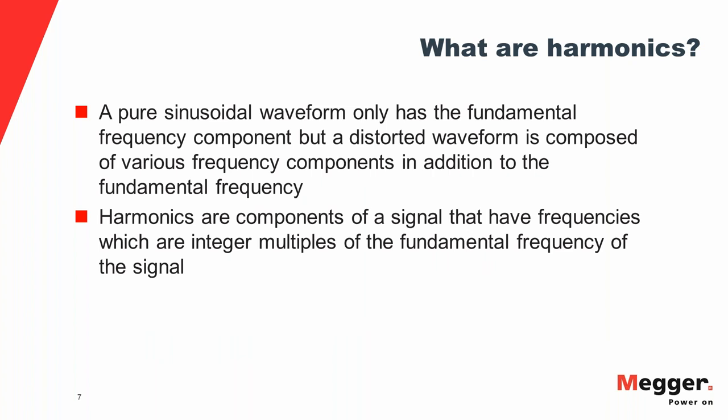What are harmonics? A clean waveform — a pure sinusoidal wave — consists only of the fundamental frequency component. The fundamental frequency is the system frequency: 60 Hz in a 60 Hz system, 50 Hz in a 50 Hz system. A 60 Hz wave completes 60 cycles in one second. A clean waveform will only have the fundamental frequency component.